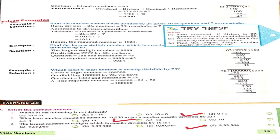Question number 2: what least number should be added to 10,056 to get a number exactly divisible by 23? For this, we first divide 10,056 by 23. Our quotient is 4,037 and remainder is 5. Next step: subtract the remainder 5 from 23. So the answer is 18. Option B is correct.